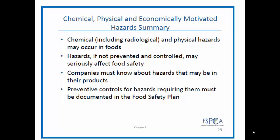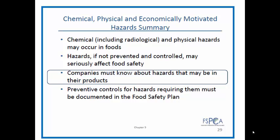In the summary section: companies must know about hazards that may be in their products. This is basically FSMA defined in 50 words or less. If there are health hazards, you need to know about them, you need a preventive control for those hazards, and you need to document them. If there are any hazards in your product, you must know about those hazards, and the ones that have a food safety level hazard require a preventive control.